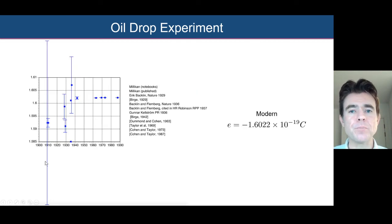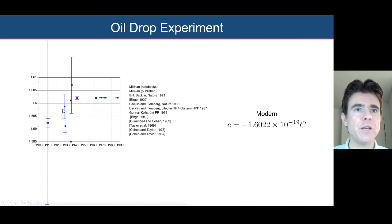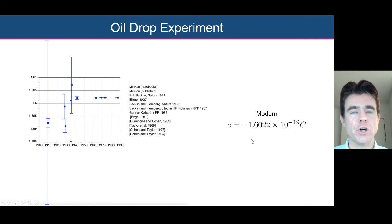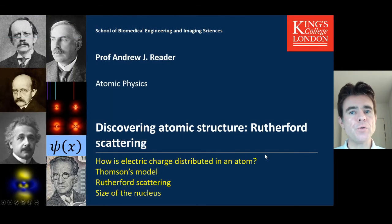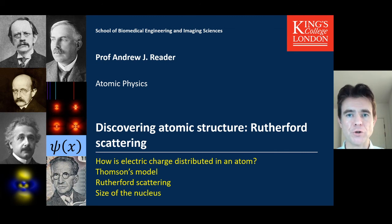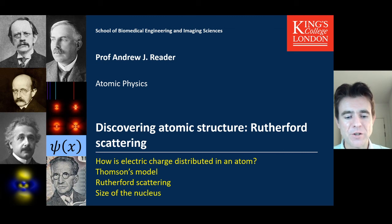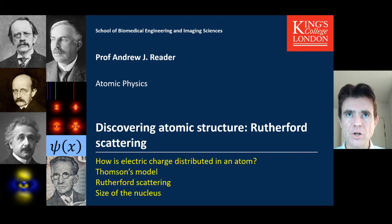Over time, people have made increasingly precise measurements of the fundamental unit of charge — that of the electron. Thanks for watching this video on the charge of the electron. Where we're going next is to explore atomic structure. We now know there are subatomic particles called electrons, we know their charge and mass, and we know they can be emitted from atoms. But what is the distribution and makeup of an atom? How are electrons distributed within it? That's where Rutherford's famous gold foil scattering experiment will come in to reveal the basic structure of the atom.